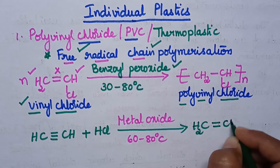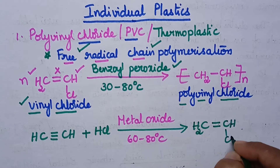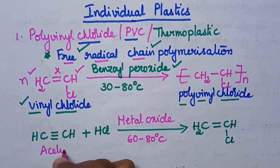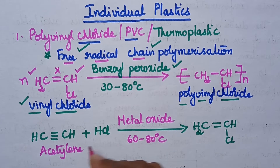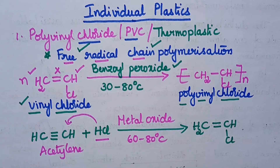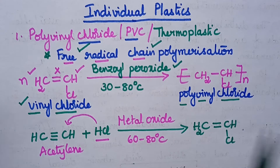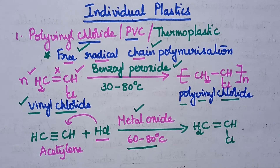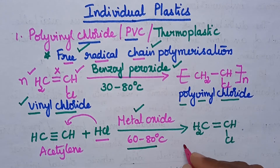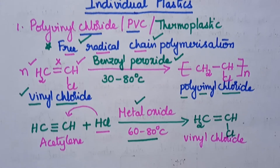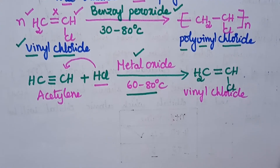Vinyl chloride has the formula CH₂=CHCl. When acetylene is treated with HCl, HCl is simply added onto acetylene in the presence of metal oxide as the catalyst, and when the temperature is maintained from 60 to 80 degrees centigrade, it results in the formation of vinyl chloride. This is about the preparation of polyvinyl chloride.